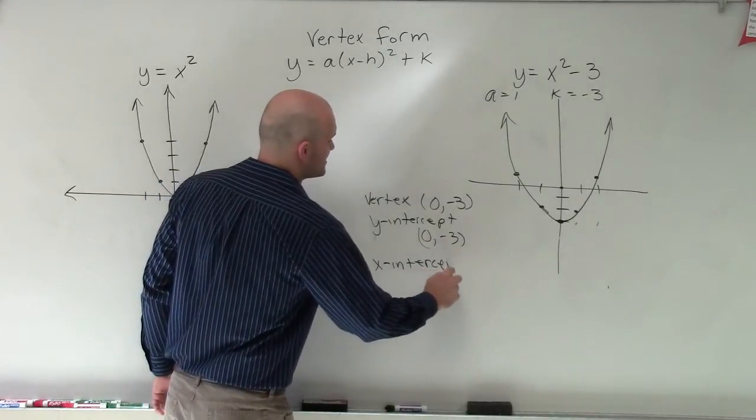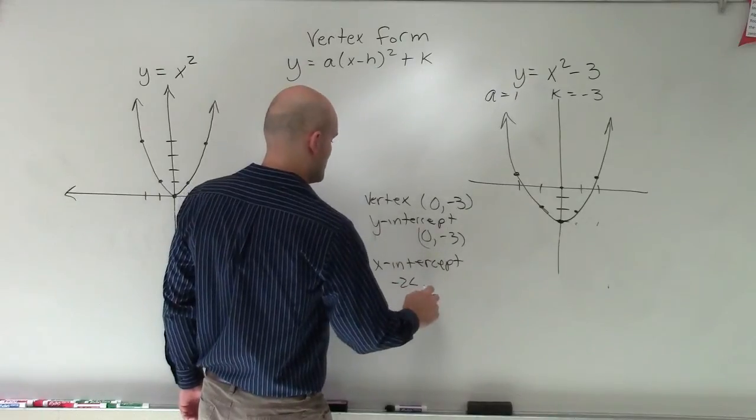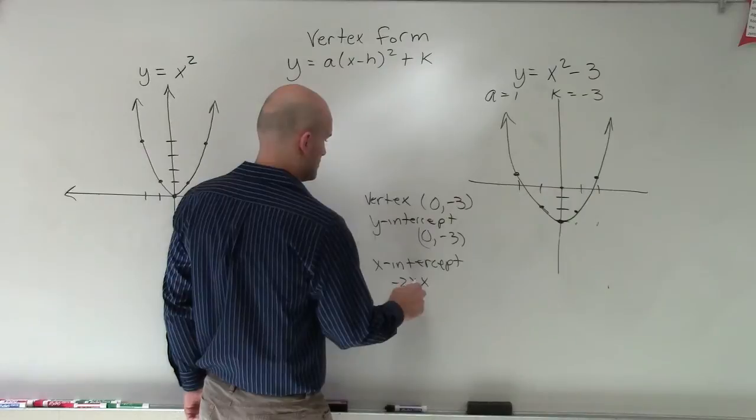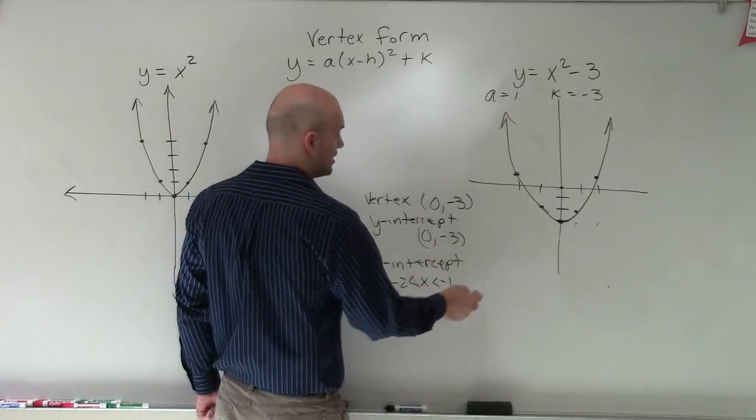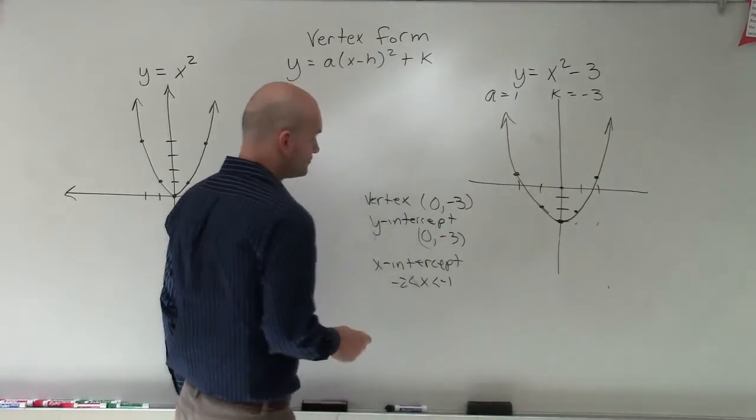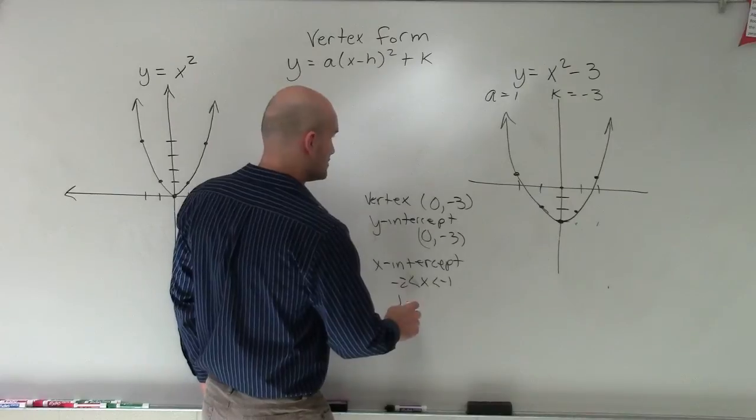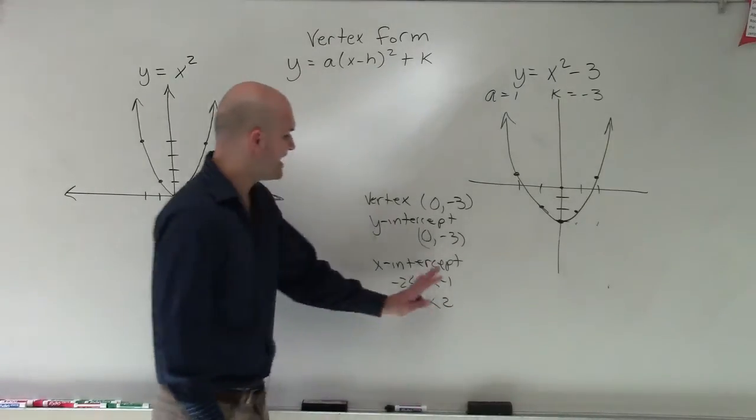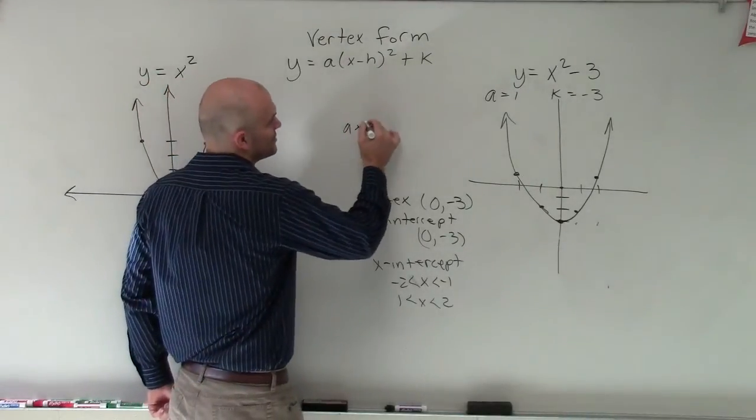But you can see my x-intercept is going to be at negative 2, which is greater than negative 1. Or it's going to be 1, which is greater than x, which is greater than 2. So I'm just going to estimate right now for my x-intercepts. And you can also see the axis of symmetry.